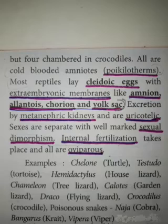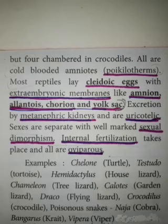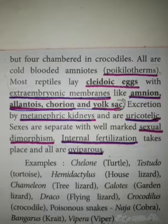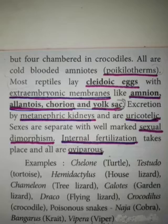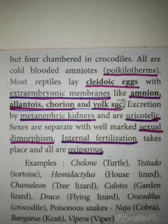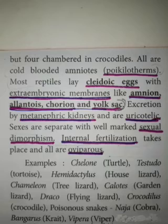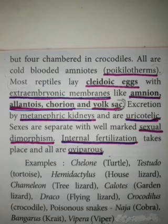Examples of reptiles include Chelone (turtle), Testudo (tortoise), Hemidactylus (house lizard), chameleon (tree lizard), Calotes (garden lizard), Draco (flying lizard), crocodile, and also poisonous snakes such as Naja (cobra), Bangarus (krait), and Vipera. All snakes come under class Reptilia.